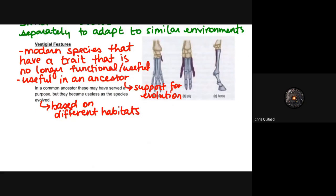The last thing to discuss is vestigial features — the idea that there are traits that stuck around as the species changed over time but provided less and less function. A modern species will have a structure that isn't really useful or functional, but it would have been useful in a precursor species. For example, the appendix is largely useless to humans and can be removed without consequence. The tailbone, or coccyx, is another vestigial feature. These are structures no longer functional in a modern species but that once served a function in a precursor species — further evidence supporting evolution.